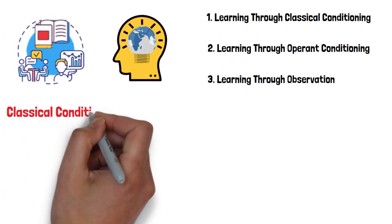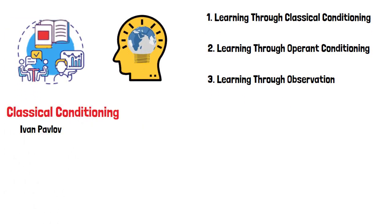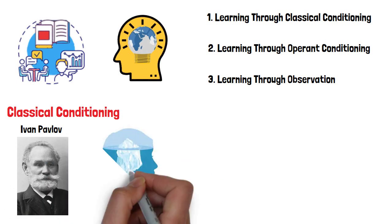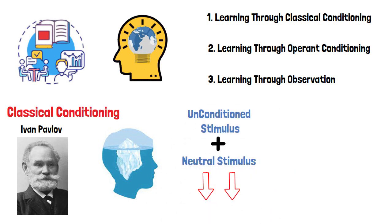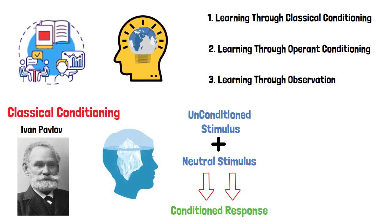Discovered by Russian physiologist Ivan Pavlov, classical conditioning is a type of unconscious or automatic learning. This learning process creates a conditioned response through associations between an unconditioned stimulus and a neutral stimulus.